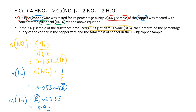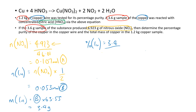Now we work out the percentage of copper. Note: do not divide by 1.2 kilograms here — that's wrong. This amount of nitrous oxide came from a 3.6-gram sample, so the percentage = 3.4 ÷ 3.6 × 100 = 94.4% copper.